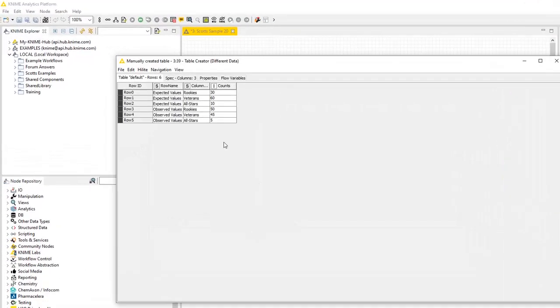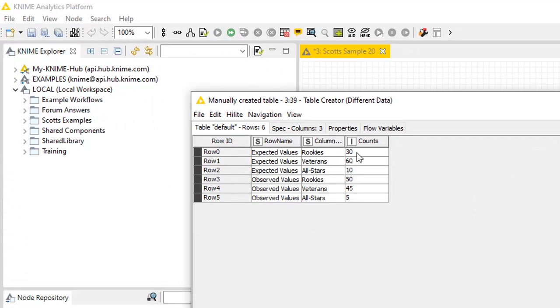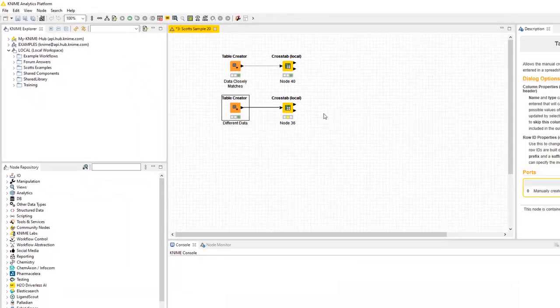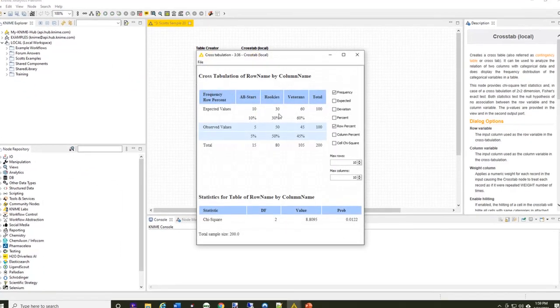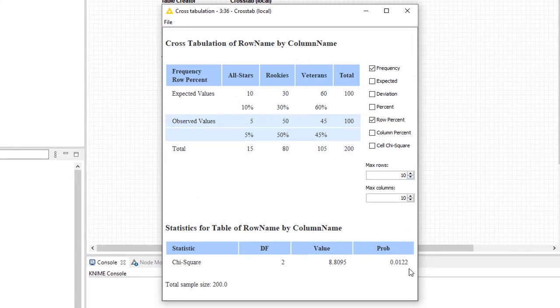I also created a separate set where I used very different data where the expected values are 30, 60, and 10, and I did 50, 45, and 5 just like our last example. Just like the last example, when I execute and open the views, this time, my probability comes out to be 0.01, which means at this point, it's well below my 0.05. I can see that there is at least one of these categories is statistically different from what the company has represented for their cards.